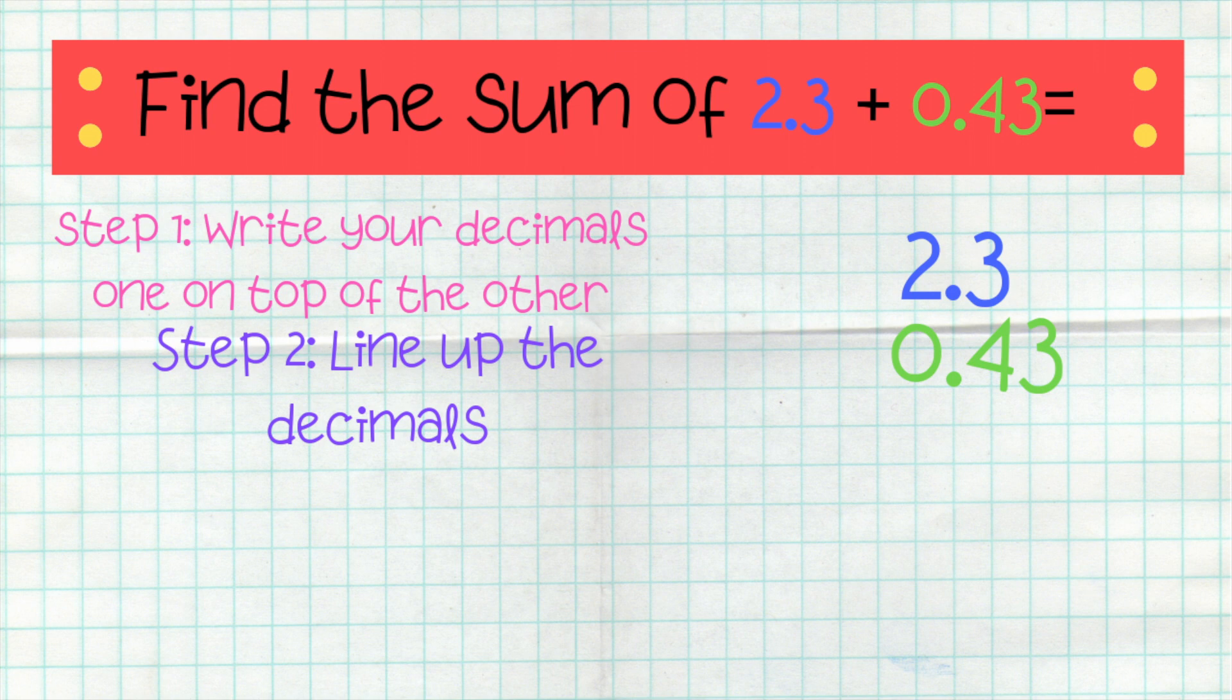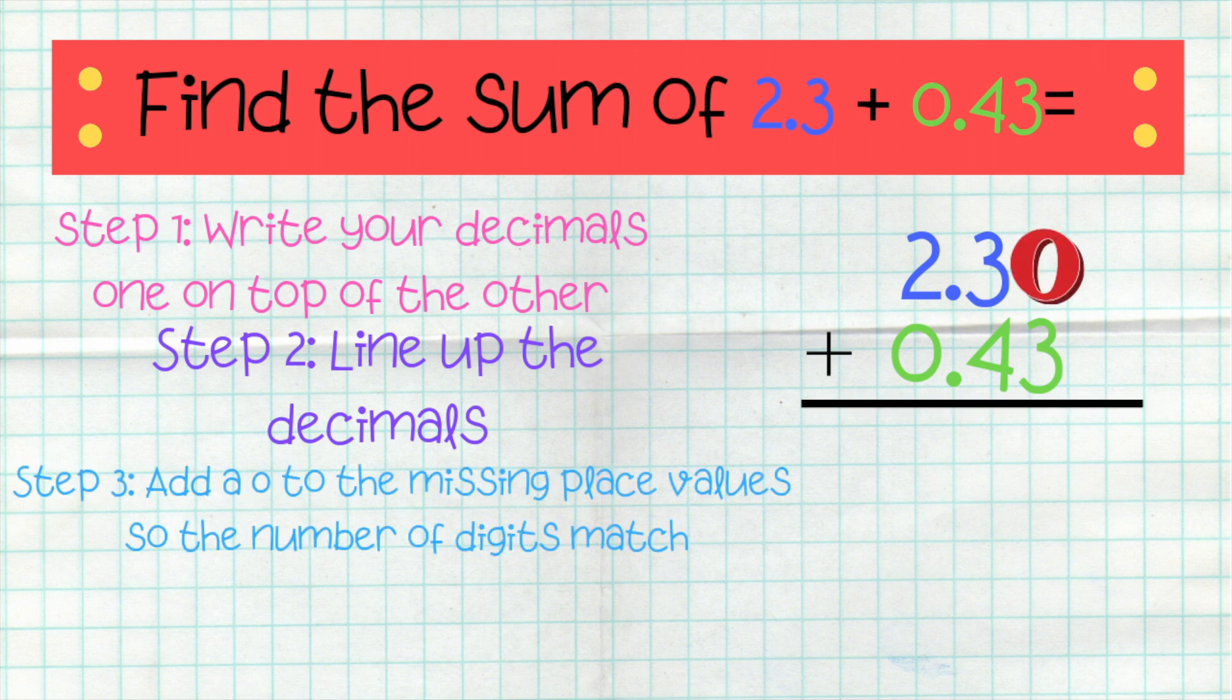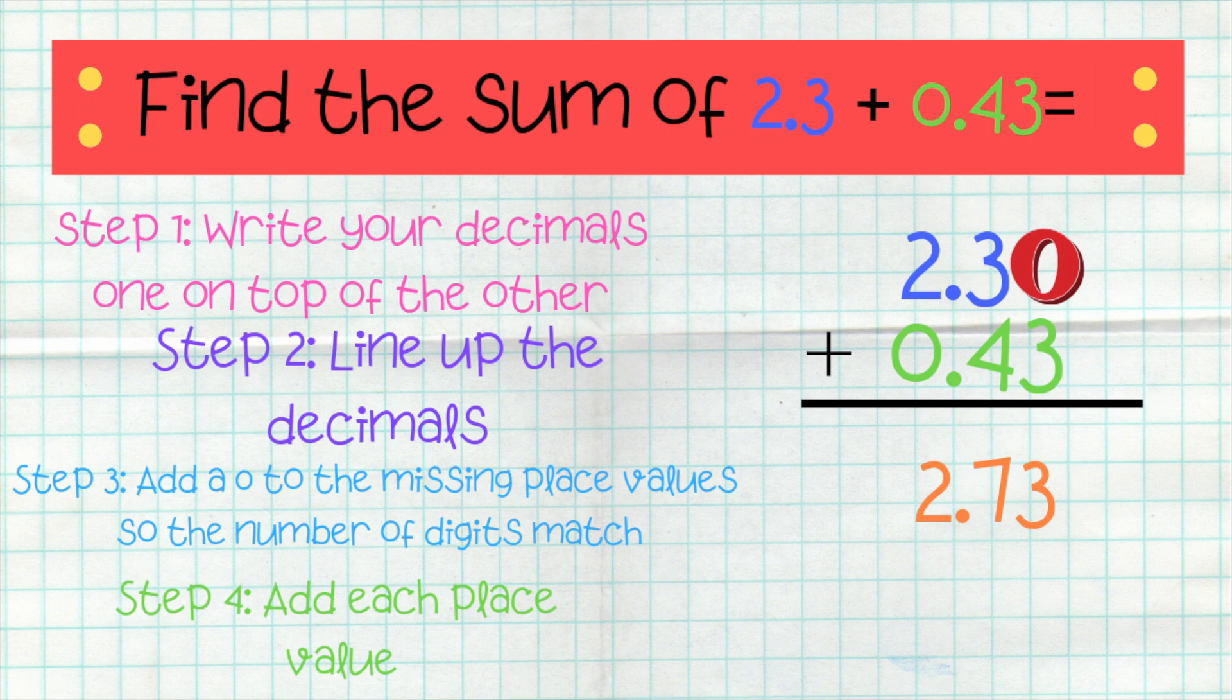And I am missing a place in the hundredths place. So, that brings me to step three. You are going to add a zero to the missing place value so that the number of digits match. Once you add the zeros, you are now going to do step four, which is to add each place value. This time, you're starting in the smallest place value, which is your hundredths. So, zero-hundredths plus three-hundredths is three-hundredths.